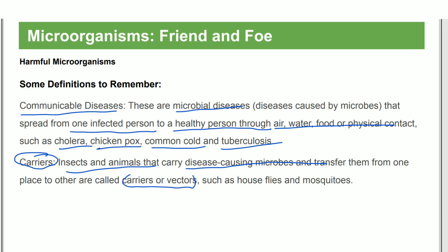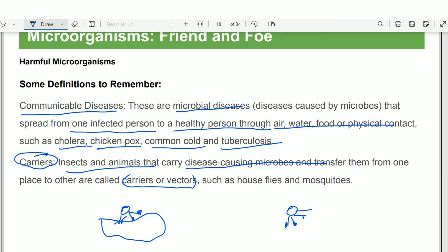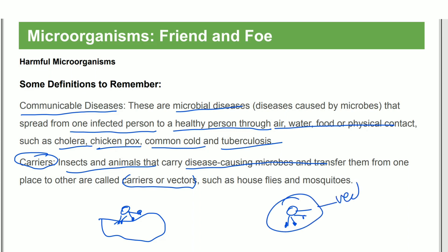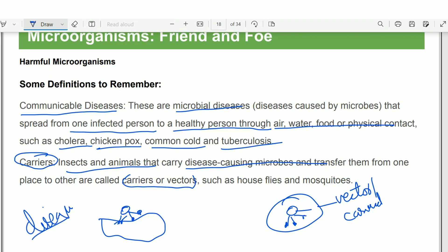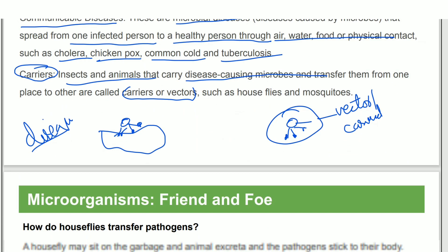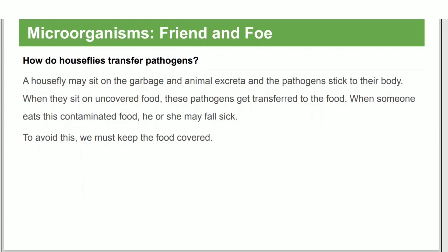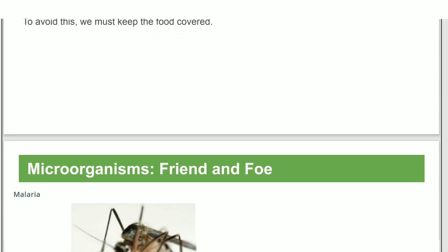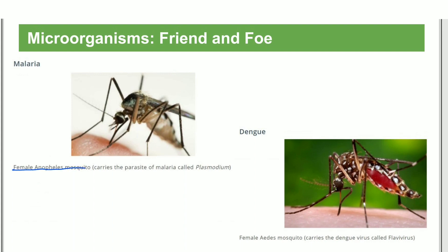Disease carriers and insects are vectors because they transfer diseases from one place to another. Food kept in unhygienic conditions can be contaminated. House flies are common vectors — they carry disease-causing microbes from unhygienic materials to our food.